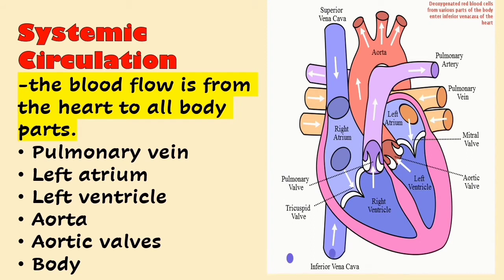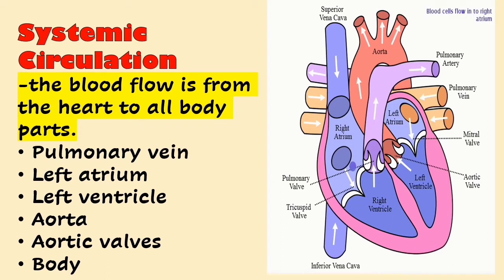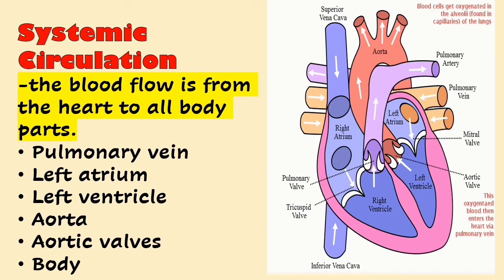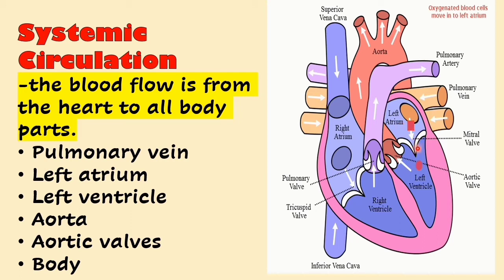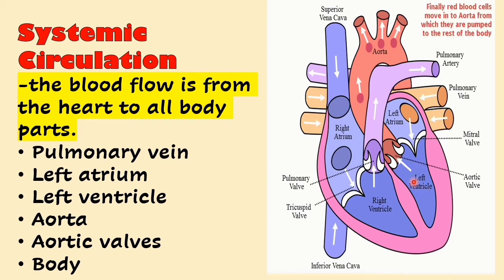In systemic circulation, blood flow is from the heart to all body parts. After the pulmonary circulation, the blood has been oxygenated. The oxygenated blood enters the pulmonary veins and into the left atrium. When the blood reaches the left atrium, it is pumped from the left atrium to the left ventricle, passing the bicuspid valve, and then going to the aorta.